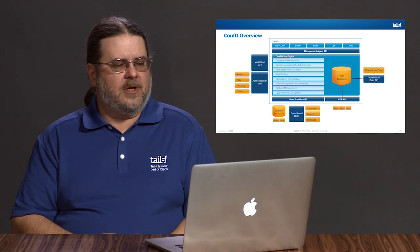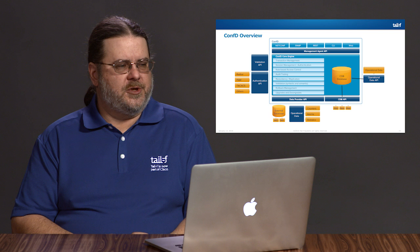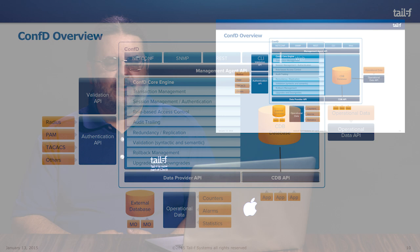ConfD also provides support for redundancy or replication of your management data for use in a high availability system. Also in ConfD is validation support — both syntactic and semantic validation — automated from the Yang data model. Earlier I mentioned things such as the typedef could be automated. Those must statements that you can use to express semantic constraints among your data can also be automated.